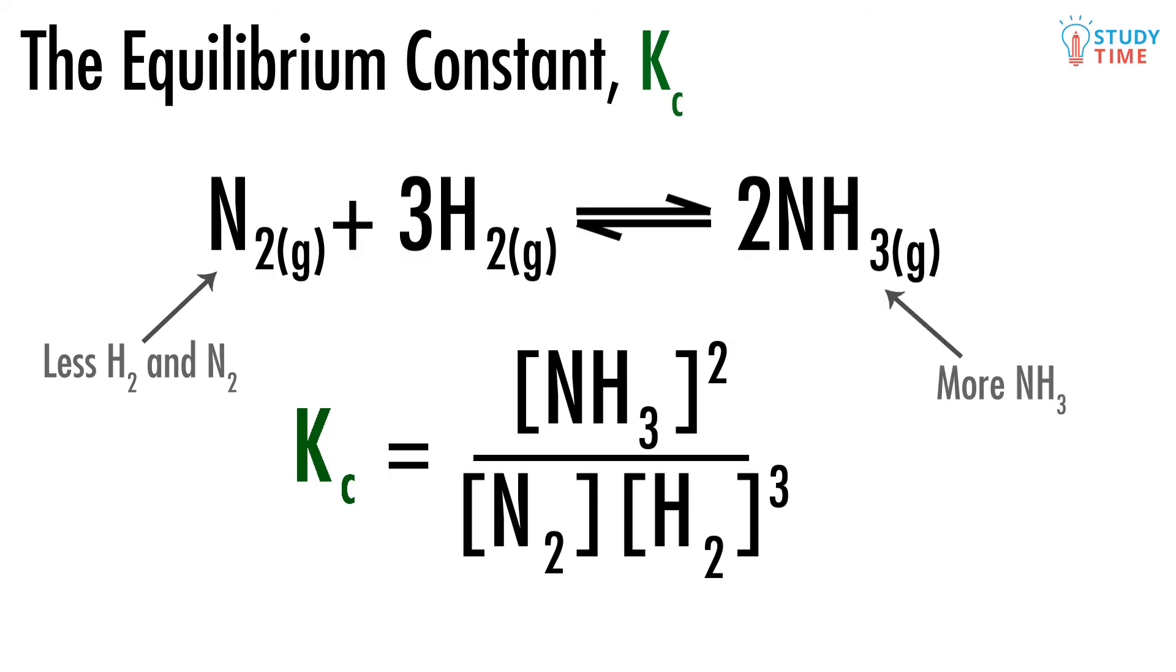We can visually illustrate what this will do to Kc with some simple arrows like this. If the numerator of the fraction increases and the things on the denominator decrease, then the overall effect on the number of K sub C is that it will increase.